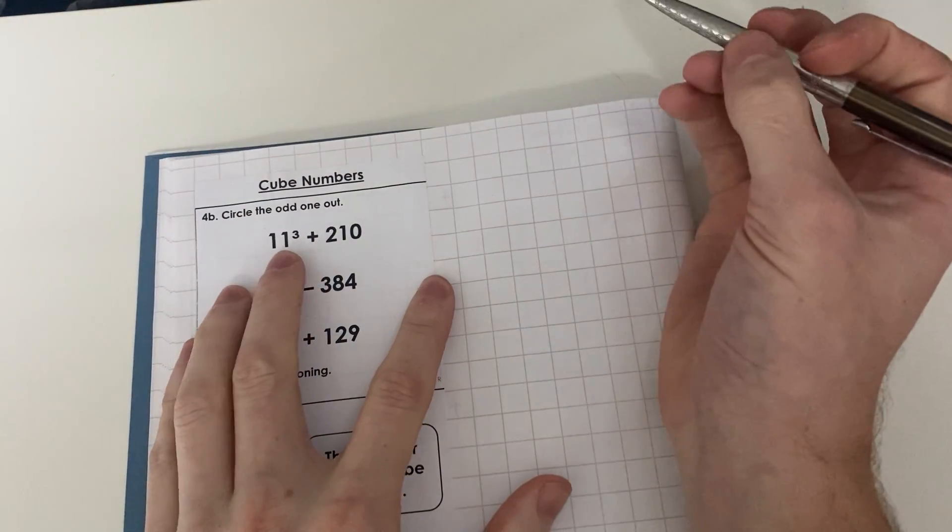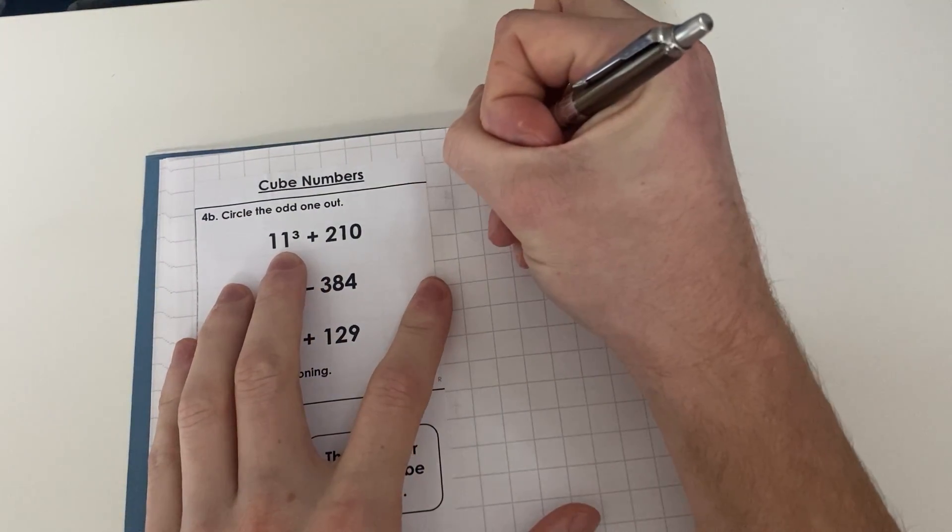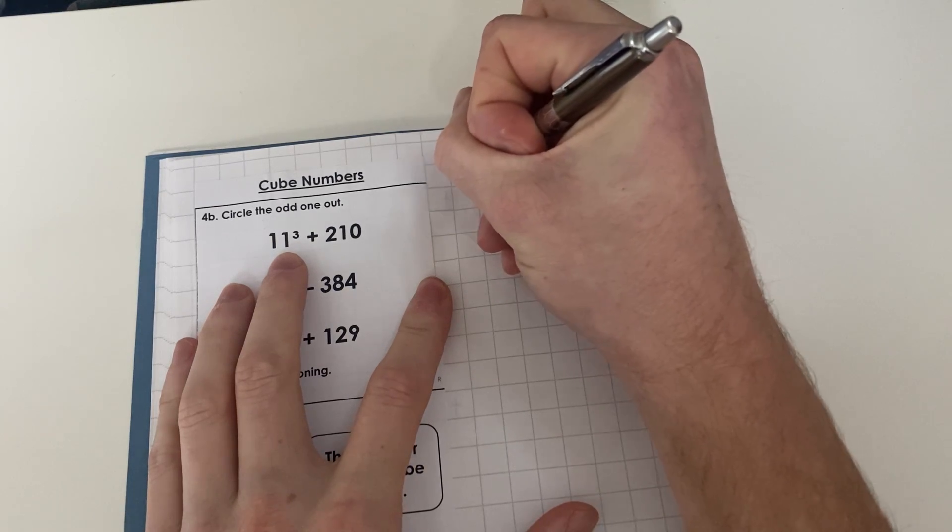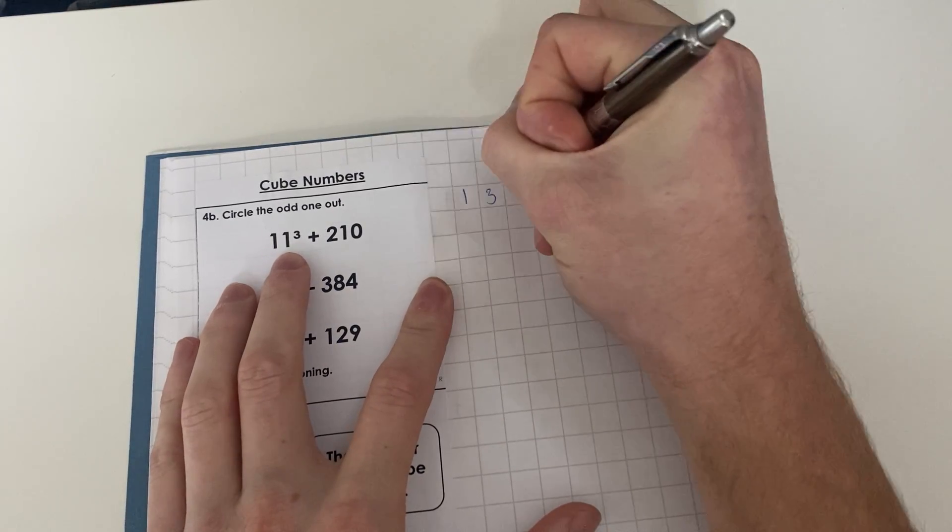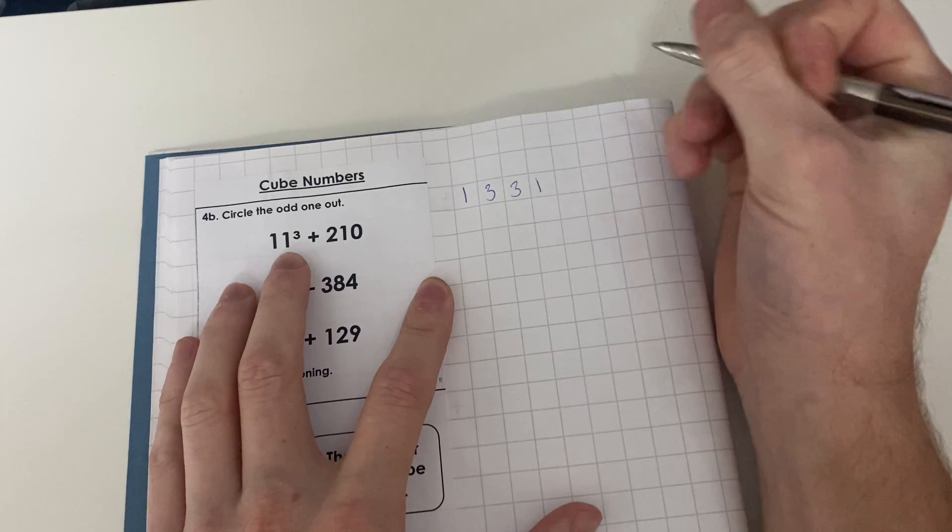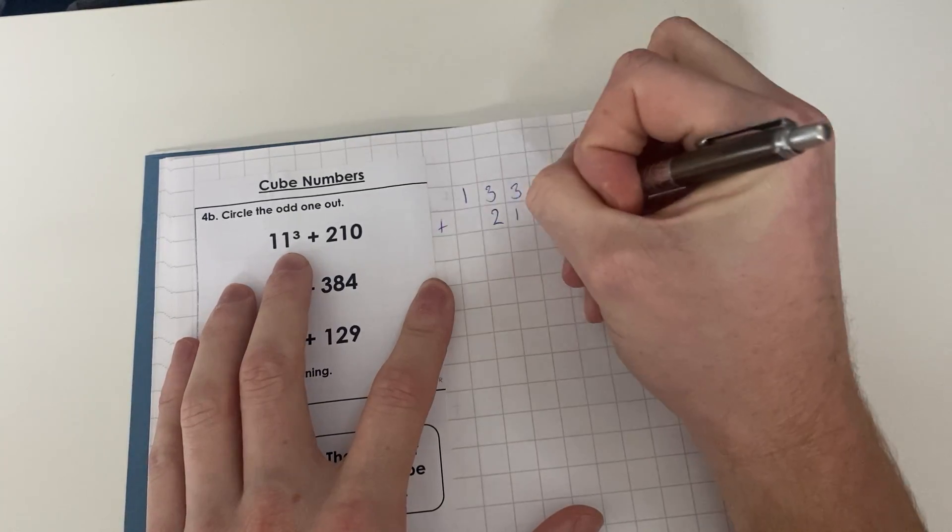So first we're going to work this out now. 11 cubed is 1331. I'm going to add 210 to it.